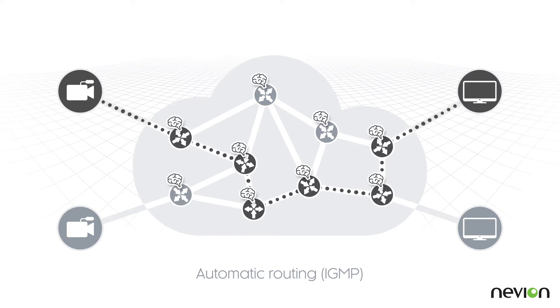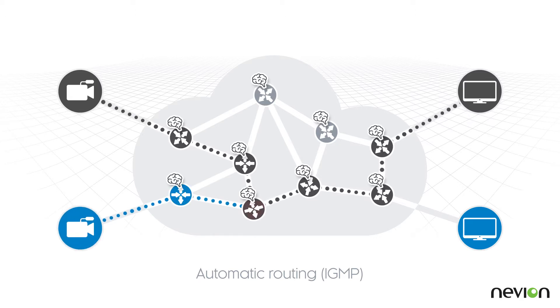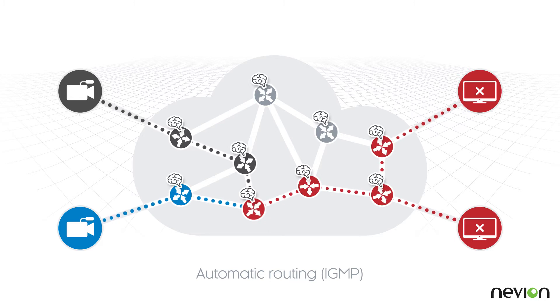However, switches don't know about the overall traffic or about planned usage. So, unless the network is over-provisioned, congestions may occur, causing disruptions.